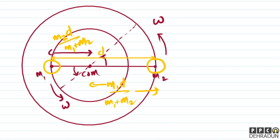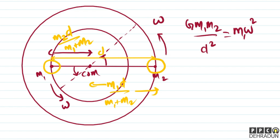We know that for a two-particle system, the center of mass divides the line joining them internally in the inverse ratio of their masses. So the gravitational force on m1, which is Gm1m2/d², provides the required centripetal force: m1·ω²·(m2·d/(m1+m2)). After cancellation, m1 and m2 cancel out.